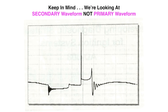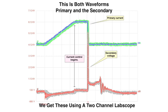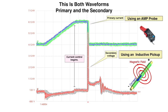This is an example of both primary and secondary. The top one in green is the primary current, and the bottom one in red is your secondary voltage. Remember the difference between current and voltage? This is obtained from using a two-channel lab scope — the top by using an amp probe and the bottom by using an inductive pickup.